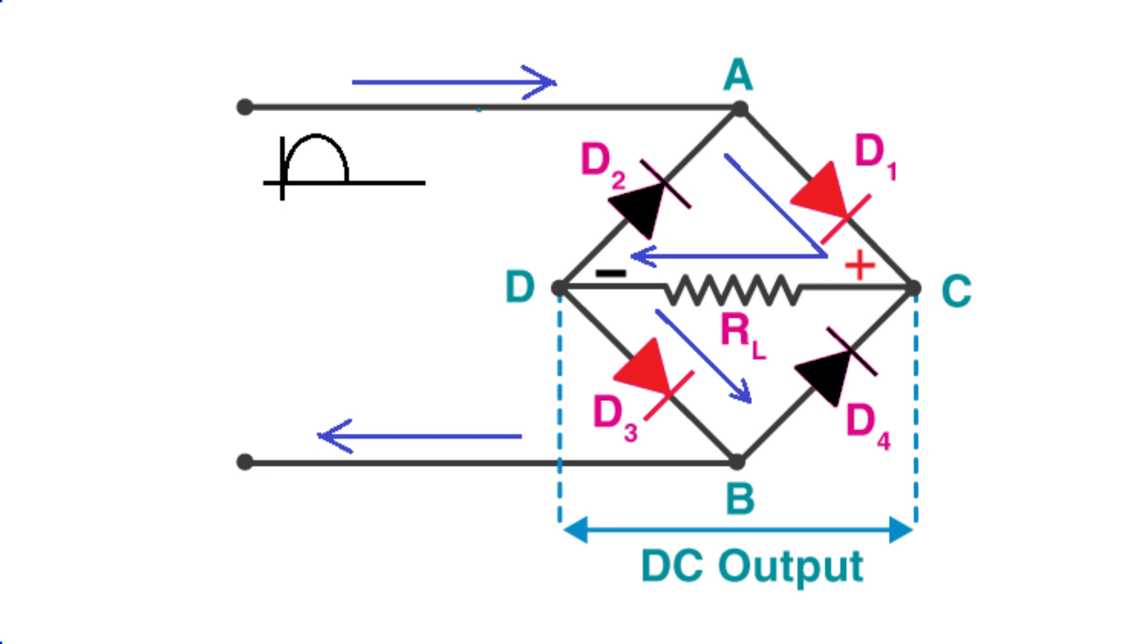Thus, the voltage developed across the load resistor RL will be positive towards the end connected to terminal C and negative at the end connected to terminal D.